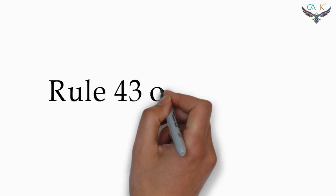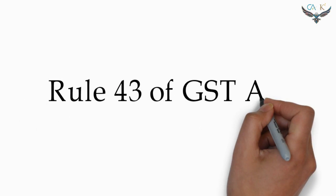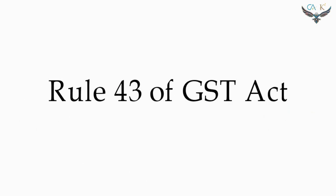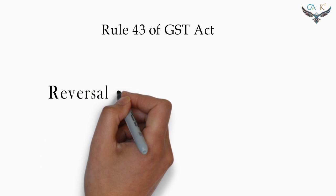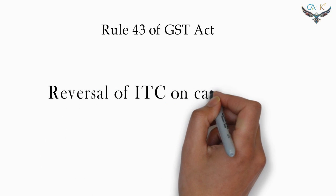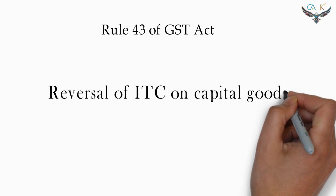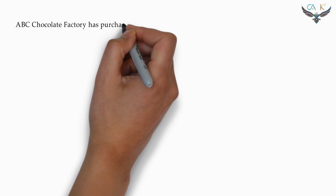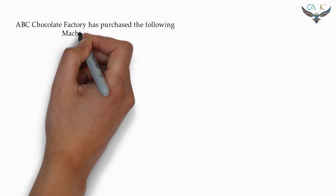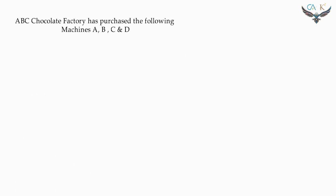Hello friends, in this particular video we are going to study about Rule 43 of the GST Act — the reversal of ITC on capital goods. Now let us take an example. Mr. ABC Chocolate Factory has purchased the following machineries.